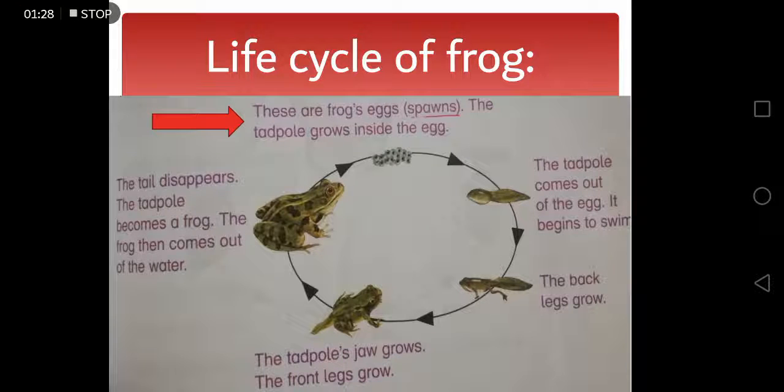As you can see, first the back legs grow and then the tadpole's jaw and the front legs grow. Till this point the baby frog still has its tail.